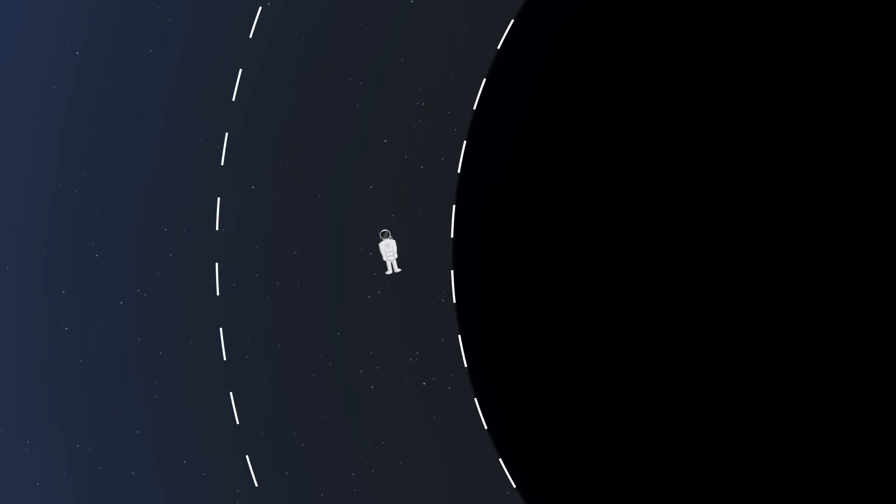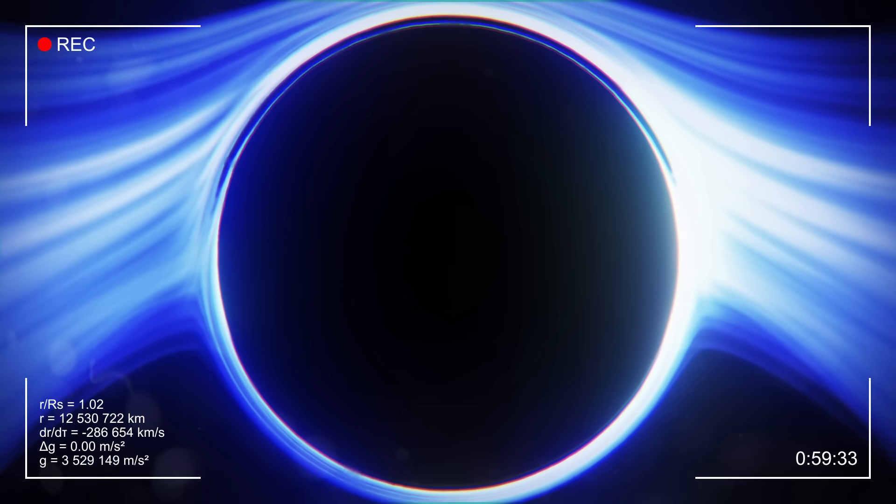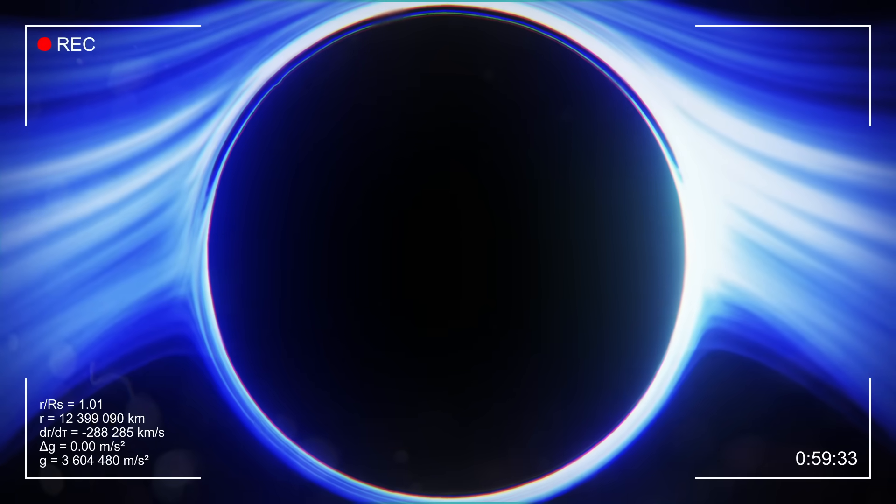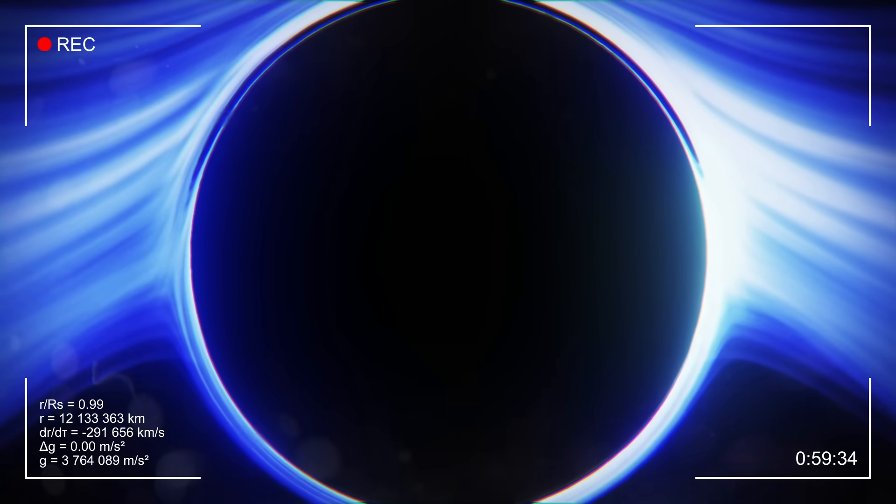But for us, just 24 seconds after crossing the photon sphere, it is time to reach the horizon. After this moment, it will be impossible for us to go back. But what do we see when crossing the horizon? Surprisingly enough, nothing special. It would in fact be very difficult to determine when exactly we crossed the horizon.